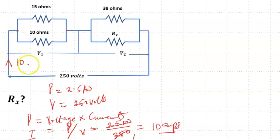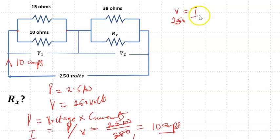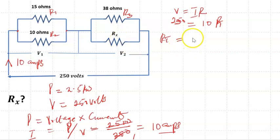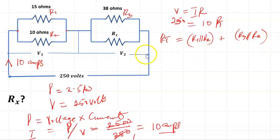With 10 amps flowing, there must be an effective resistance RT in the circuit. From Ohm's law, V equals IR, so 250 equals 10 times RT. Looking at the circuit carefully, there are two parallel resistors in series with another set of two parallel resistors. Let's label them R1, R2, R3, and Rx — where R1 is in parallel with R2, and both are in series with R3 in parallel with Rx.